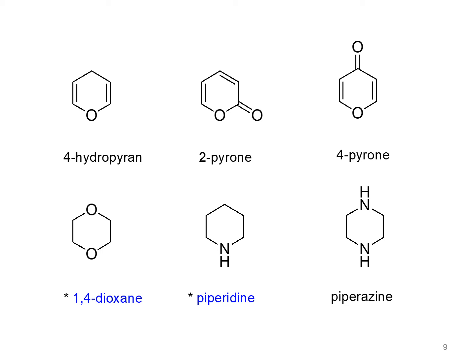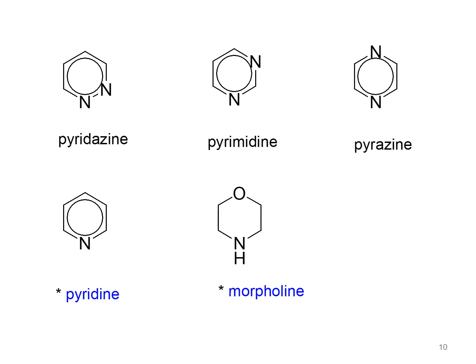Here we can see some examples of six-membered heterocyclic compounds. Some contain one hetero atom and some contain more than one hetero atom. These compounds are known either by their traditional trivial name, by their Hantzsch-Widman system name, or by their IUPAC system name. The majority are known by their trivial name.